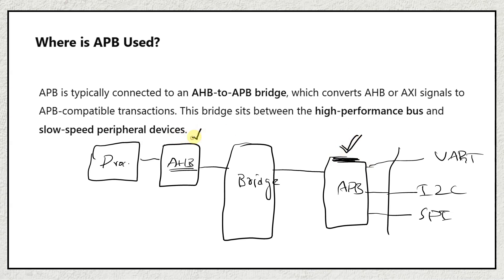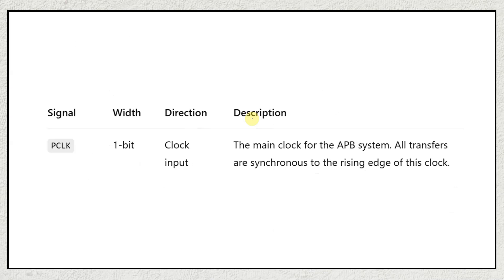We have already completed the AHB protocol and now we are going to learn about the APB protocol — how APB communicates with peripheral devices. After this, we will discuss the bridge. The bridge sits between the high-performance bus and slow-speed peripheral devices. This is how we establish communication between an AHB interface and an APB interface.